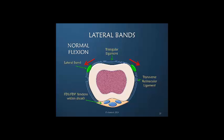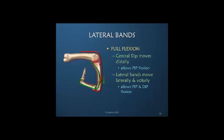During normal flexion, these retinacular structures help retain the correct movement of the lateral bands. The central slip moves distally to allow flexion, while the lateral band moves both laterally and volarly. The distal movement of the central slip is what allows PIP flexion, while the lateral and volar movement of the lateral band allows both PIP and DIP flexion.